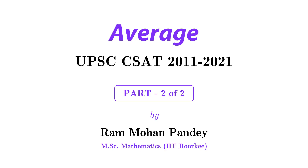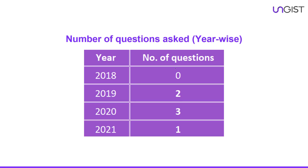Hello everyone. This is part 2 of the topic 'Average' from our UPSC CSAT PYQ series. Let us discuss how many questions came in which year, and after that we will talk about the solutions. In 2018 they asked no question, in 2019 two questions, in 2020 three questions, and in 2021 one question was there from this topic. So in this video we are going to discuss these six questions.